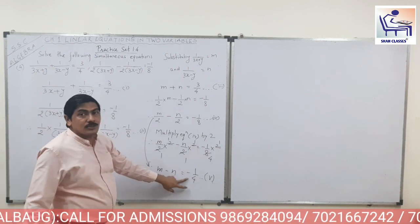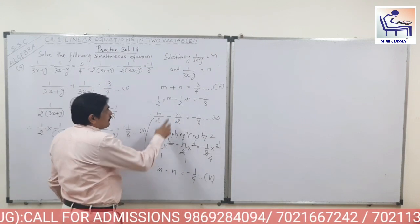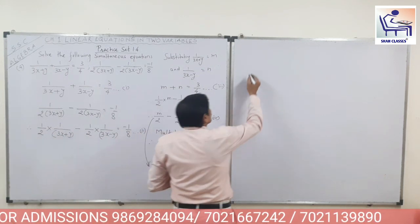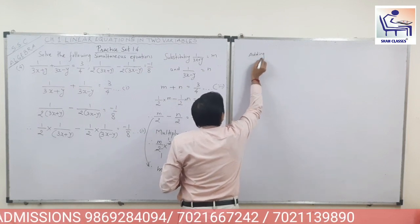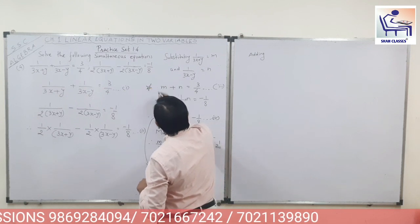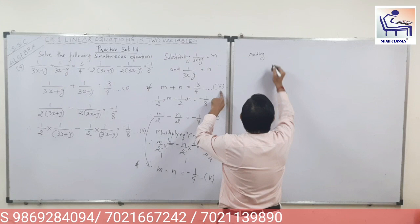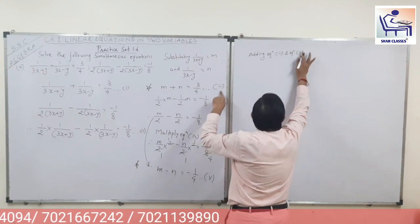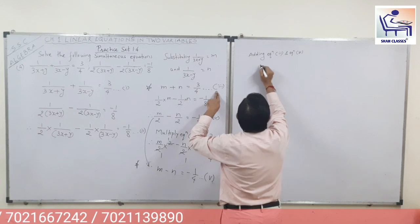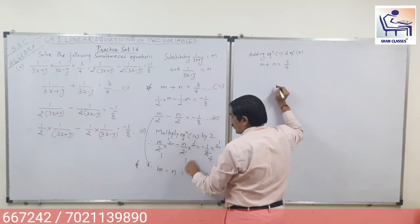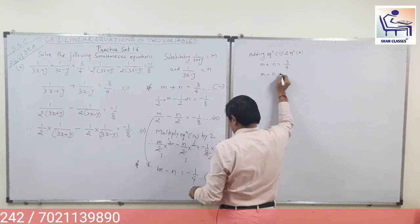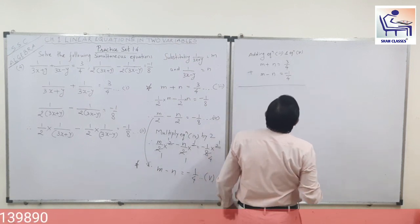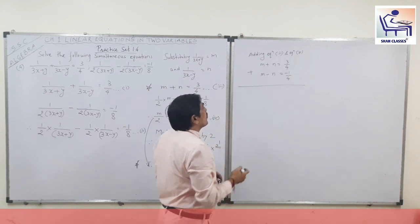So M minus N is equal to minus 1 upon 4. Looking at equations 3 and 5: there is plus N in equation 3 and minus N in equation 5, so we can do addition. Adding equation 3 and equation 5: M plus N is equal to 3 upon 4, and M minus N is equal to minus 1 upon 4. Plus N and minus N get cancelled.